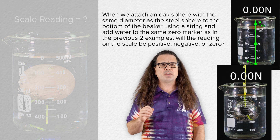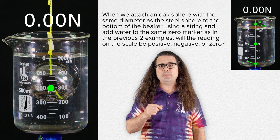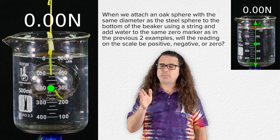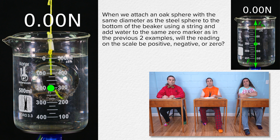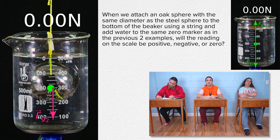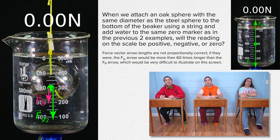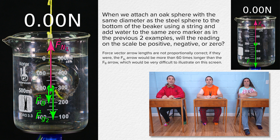Let's go back and draw the free body diagram of the forces acting on the water and beaker with the steel sphere submerged in the water. The force of gravity on the water and beaker is down, with a subscript of two because it is the smaller force of gravity since there is less water in the beaker. The buoyant force is also down. And the normal force is up, still with a subscript of one because it has the same magnitude as before with only water but more water in the beaker. That's why the reading on the scale is still zero — the force normal is the same as before.